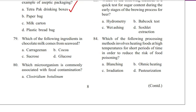Question 79. Which of the following ingredients in chocolate milk comes from seaweed? A. Carrageenan, B. Cocoa, C. Sucrose, D. Glucose. The answer is A. Carrageenan.